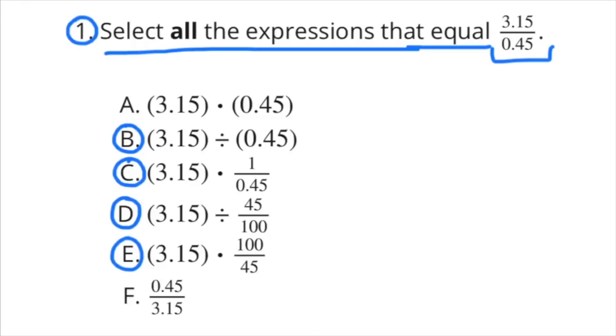Number 1: Select all expressions that equal 3 and 15 hundredths over 45 hundredths. Well, 3 and 15 hundredths over 45 hundredths means 3 and 15 hundredths divided by 45 hundredths, so we can circle B.